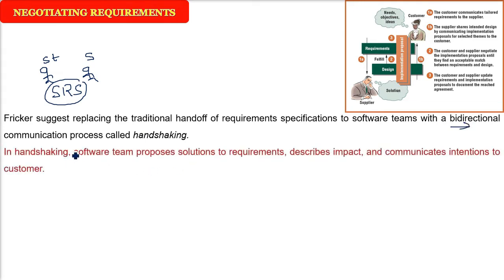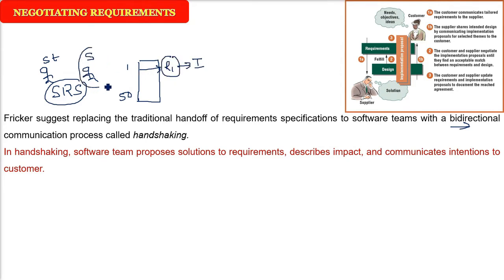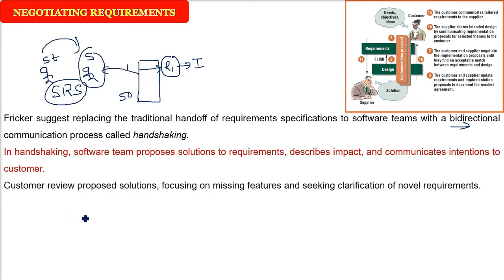In handshaking, the software team, with a basic understanding, will propose a certain requirement solution — these are the requirements, for each requirement this is the content, this is how it is going to impact, and what are our intentions. We need to explain it to the customer. The software team is proposing and explaining. Now the customer — the stakeholders — will understand and try to understand the solution, then try to find out what are the missing features. If there are certain new ideas put forward, they will ask for clarification.